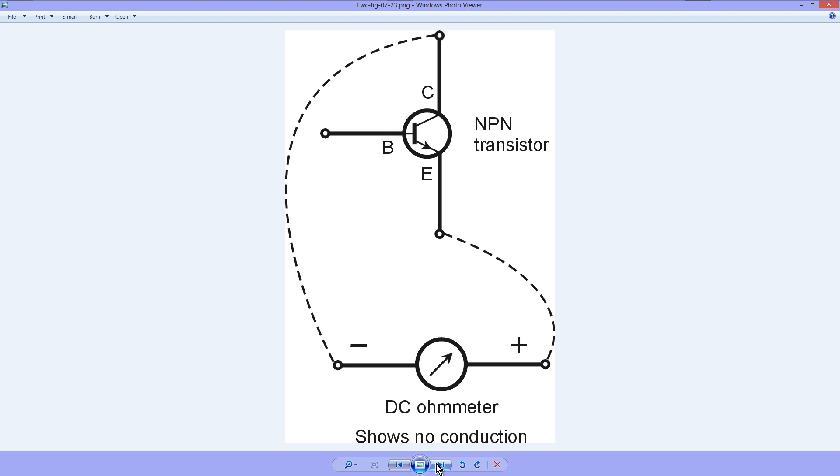So those are the tests. If you get a transistor and you test it and you know that your meter produces enough voltage, and you know that you've determined the polarity correctly, and you do not get these results, then chances are that your transistor has burned out.